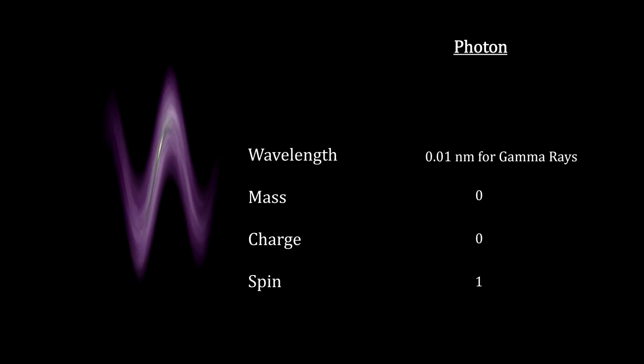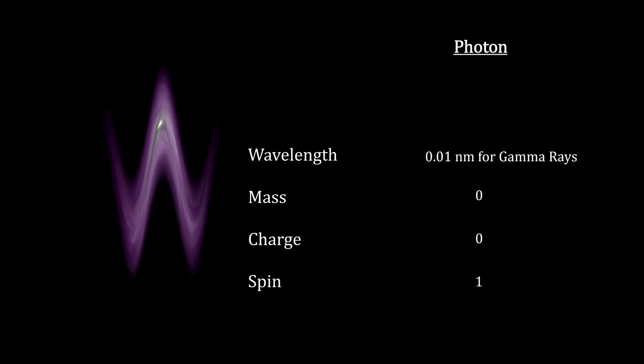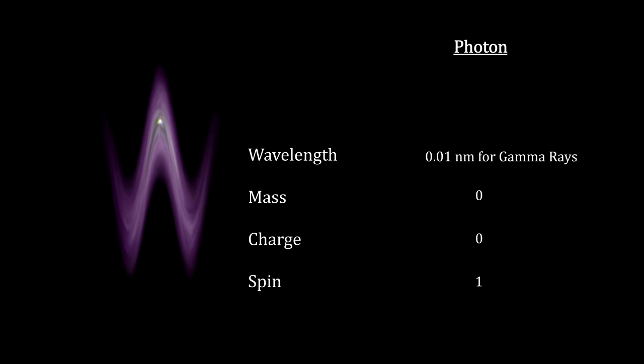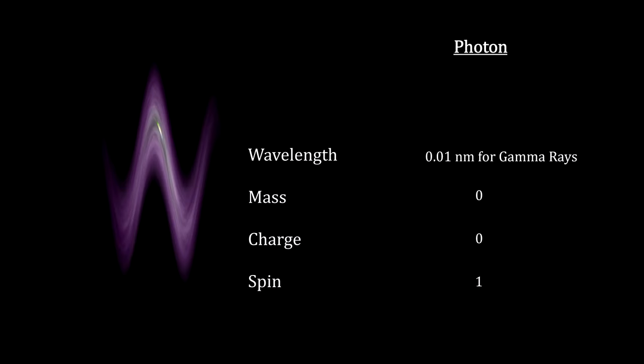For the gamma rays coming out of uranium, the wavelength is one-one-hundredth of a nanometer. That's 51,000 times smaller than the wavelength of green light.